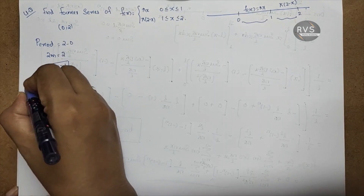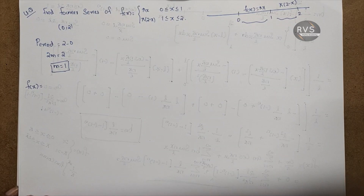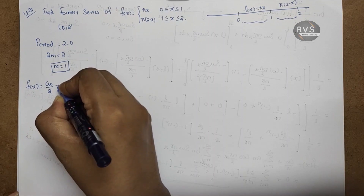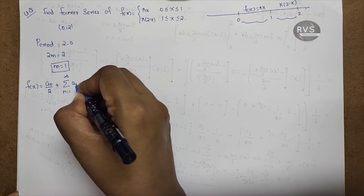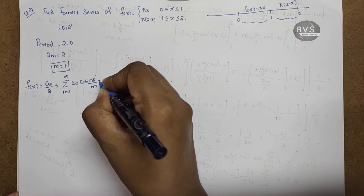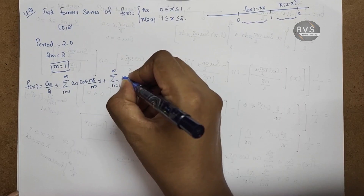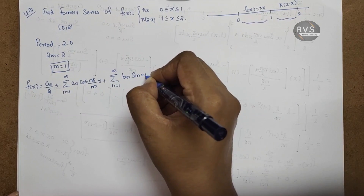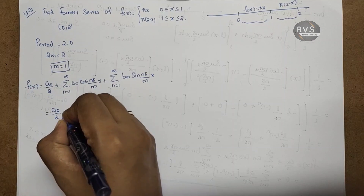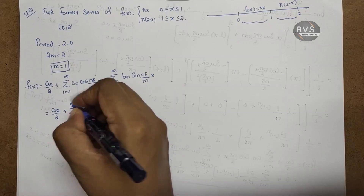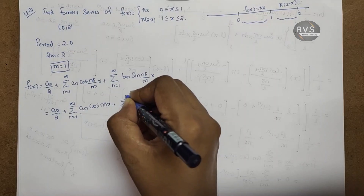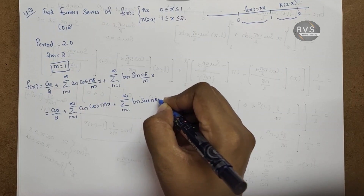We have to apply the general Fourier series formula. F of x equals a0 by 2 plus summation n equal to 1 to infinity of a_n into cos(nπx), plus summation n equal to 1 to infinity of b_n into sin(nπx). Here nx in the formula means nπx.